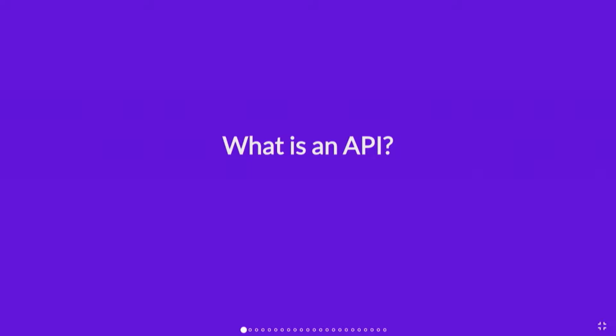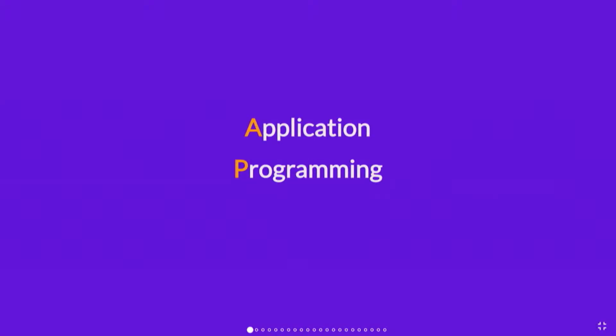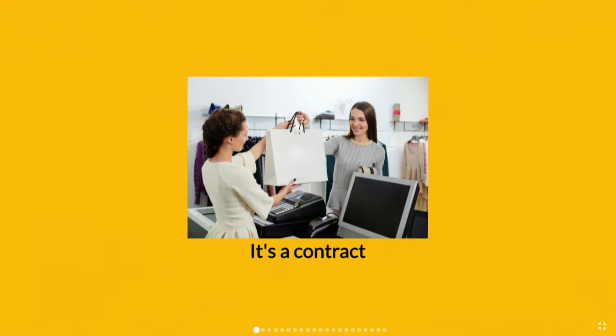I'm not going to assume anyone in this room doesn't know what an API is, so I'll try not to keep it too dumbed down. An API is an application programming interface — the way that software communicates with other software. The biggest thing to highlight is it's a contract.